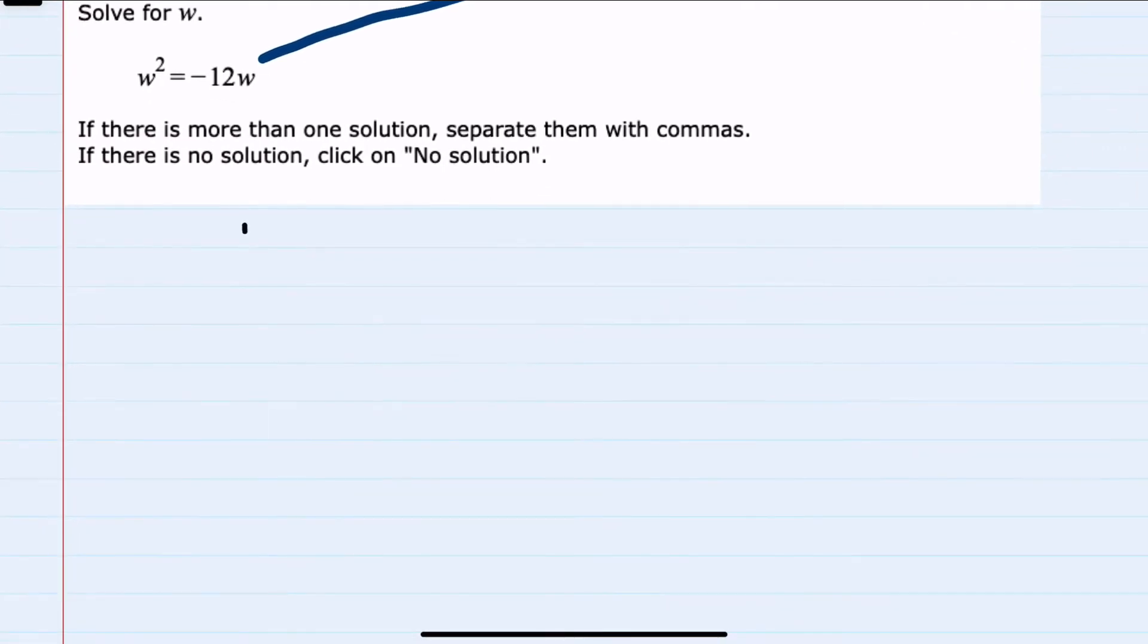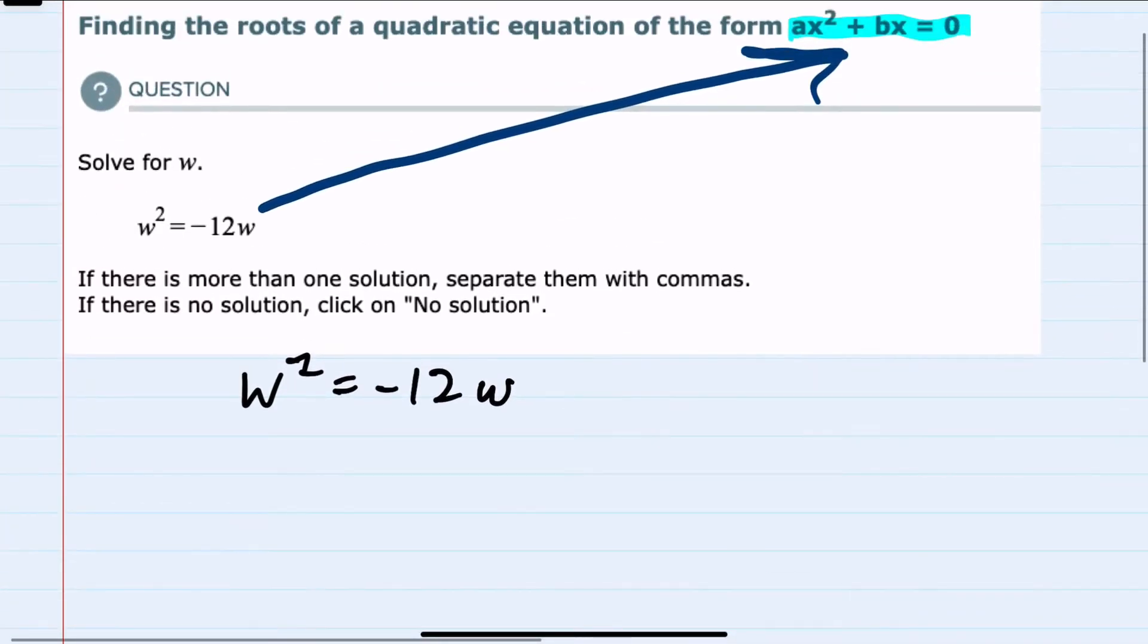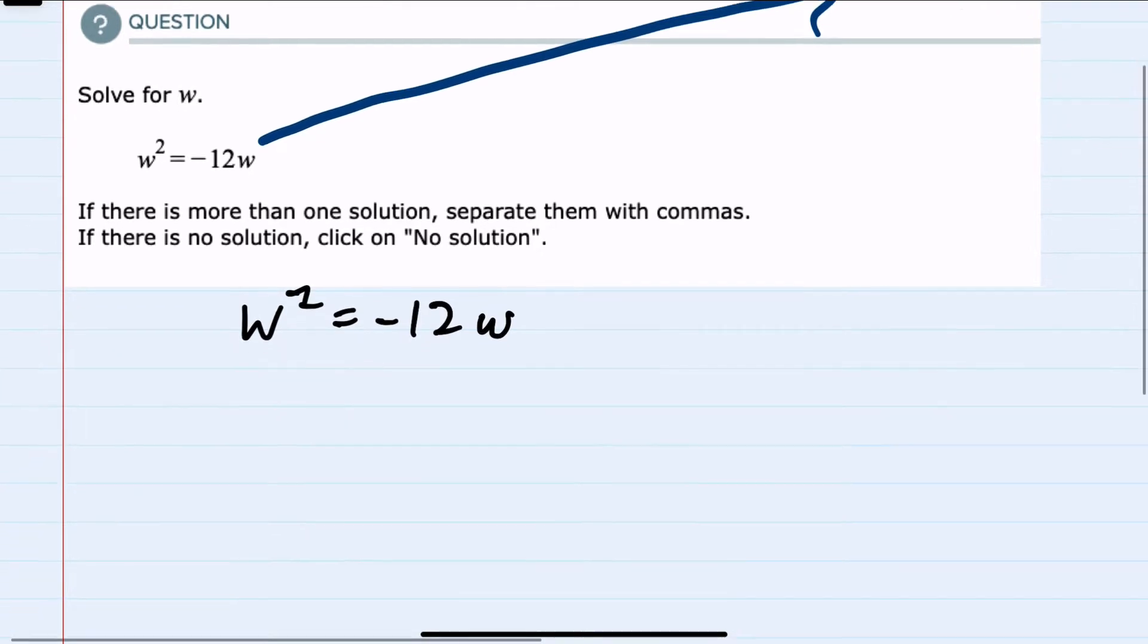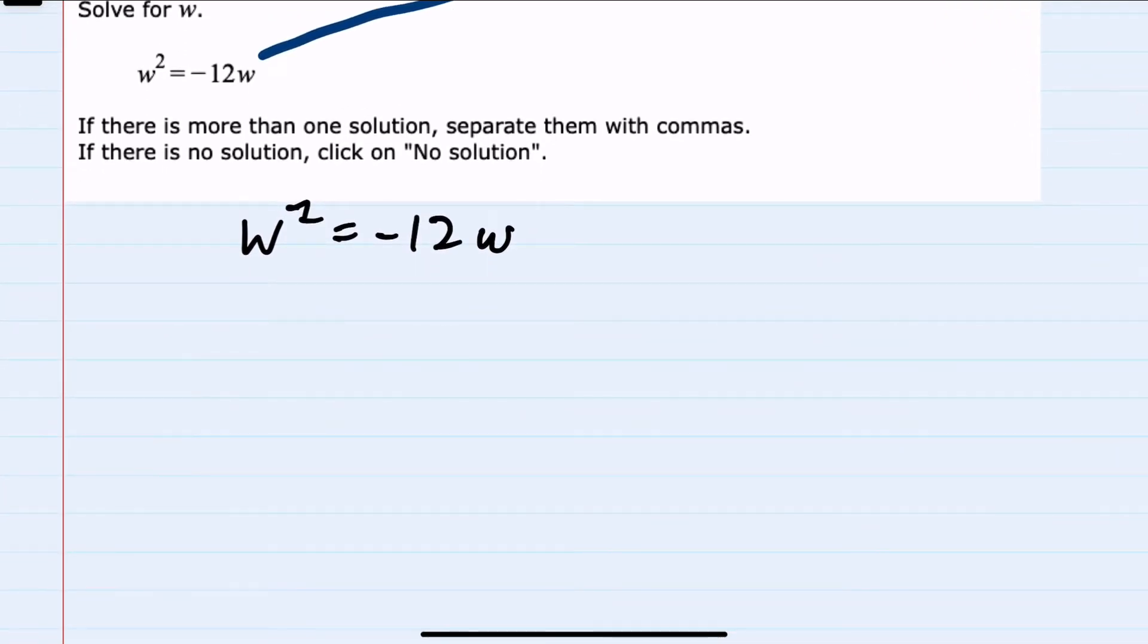So to do so, I'll take the w squared equals negative 12w that we're starting with, and we need to set that equal to zero. I can do that here by moving the terms to one side. And since the w squared is already on the left, I can add the 12w to both sides.